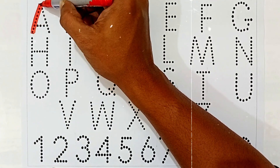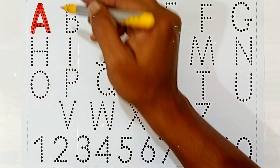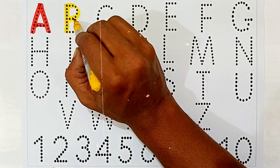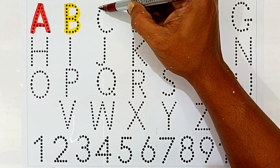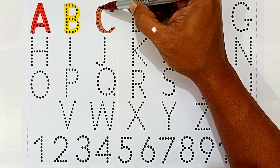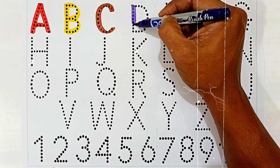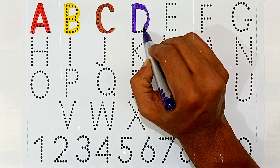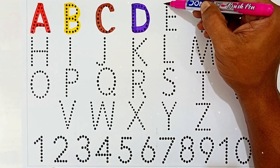A — this letter name is A, A for apple. A ke baad kya hata hai? B — this letter name is B, B for ball. B ke baad C — this letter name is C, C for cow. C ke baad D — this letter name is D, D for dog.